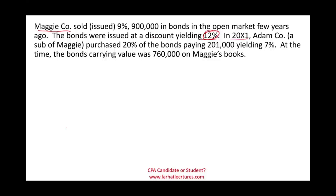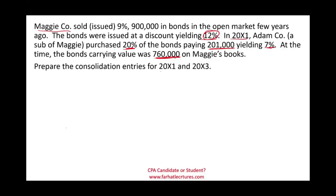In 20X1, at the beginning of the year, Adam Company — a subsidiary of Maggie — purchased only 20% of the bonds, and Adam paid $201,000, yielding 7%. When Maggie sold the bond, the discount yielded 12%, so the interest expense Maggie records will differ from the interest revenue Adam records. At that time, the carrying value of the bond on Maggie's books was $760,000. We will prepare consolidation entries for 20X1 and for 20X3.